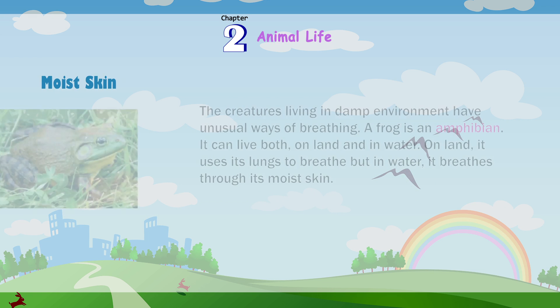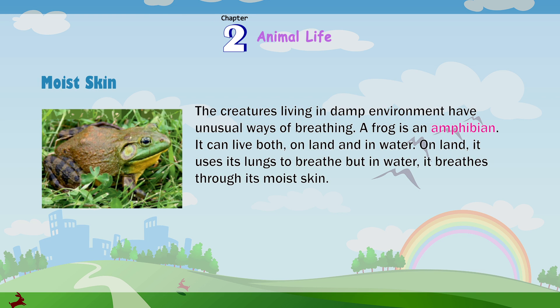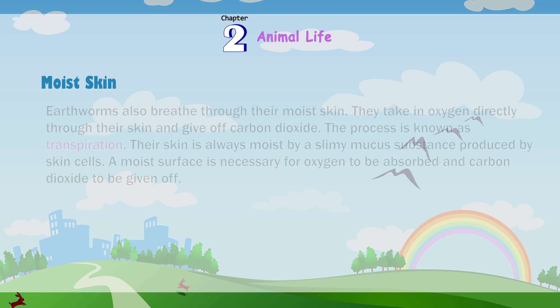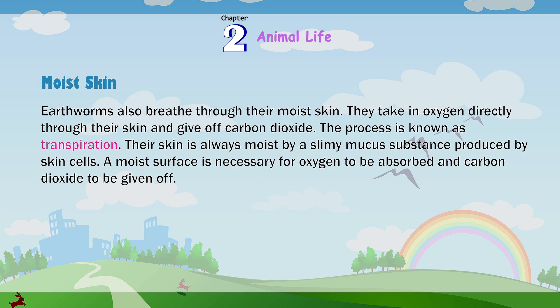Moist Skin. The creatures living in damp environments have unusual ways of breathing. A frog is an amphibian — it can live both on land and in water. On land, it uses its lungs to breathe, but in water it breathes through its moist skin. Earthworms also breathe through their moist skin. They take in oxygen directly through their skin and give off carbon dioxide. This process is known as transpiration. Their skin is always kept moist by a slimy mucus substance produced by skin cells. A moist surface is necessary for oxygen to be absorbed and carbon dioxide to be given off.